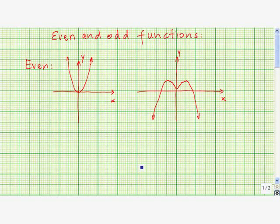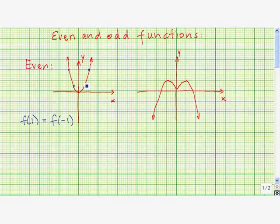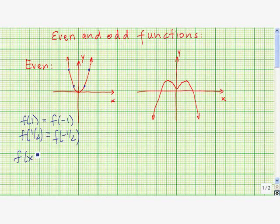Another way to think about even functions is algebraically. Let's take a look at the y-value when x is equal to 1 — it's up there at 2. When x is equal to negative 1, the y-value is also 2, so f(1) = f(-1). Likewise, the y-value when x = 1/2 equals the y-value when x = -1/2, so f(1/2) = f(-1/2). For any x value we choose, the y-value for x is always going to equal the y-value for negative x.